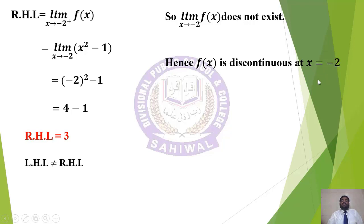One part remains: check continuity at x = 2 for the same function — that is left as an assignment. In this question's type, we solved one example where the function was continuous and another where it was discontinuous. Hopefully today's both topics are now clear to you.